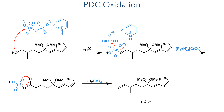Taking this forward, the hydroxyl group was once again oxidized, this time with PDC. The alcohol attacks the dichromate, and the resulting intermediate eliminates an equivalent of dipyridinium chromate. An intramolecular hydrogen abstraction then occurs, liberating chromic acid and producing the target aldehyde in a 60% yield.